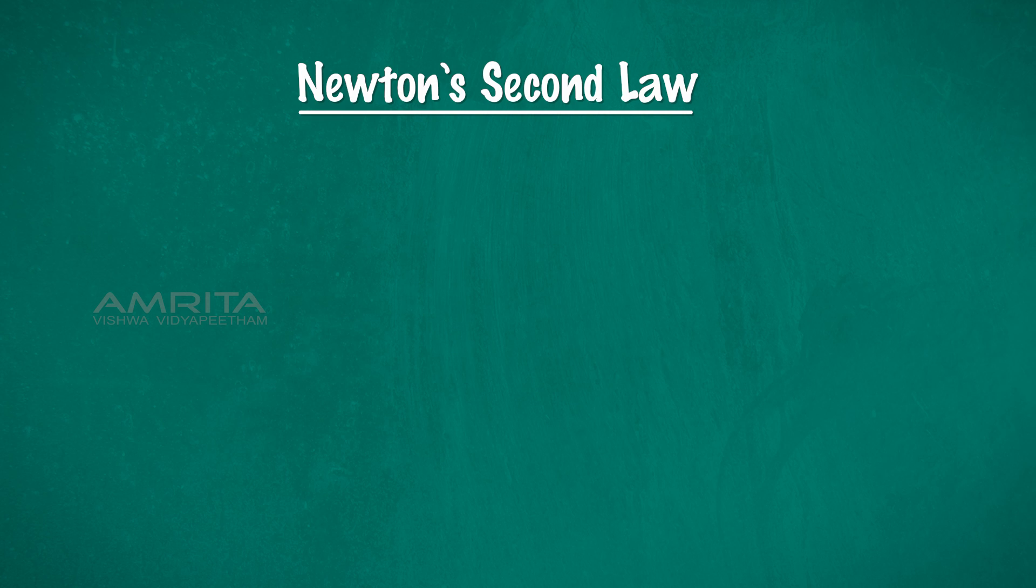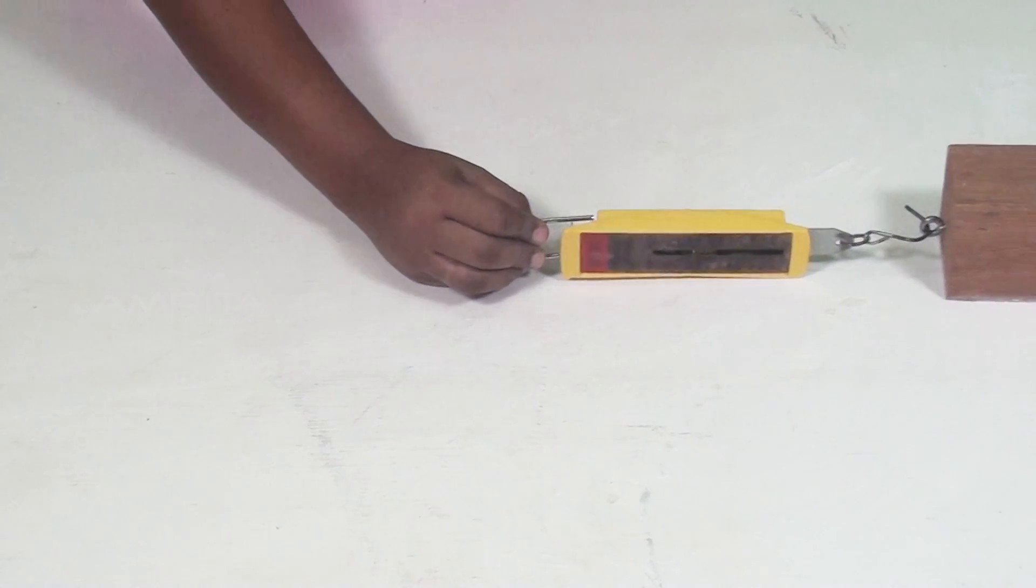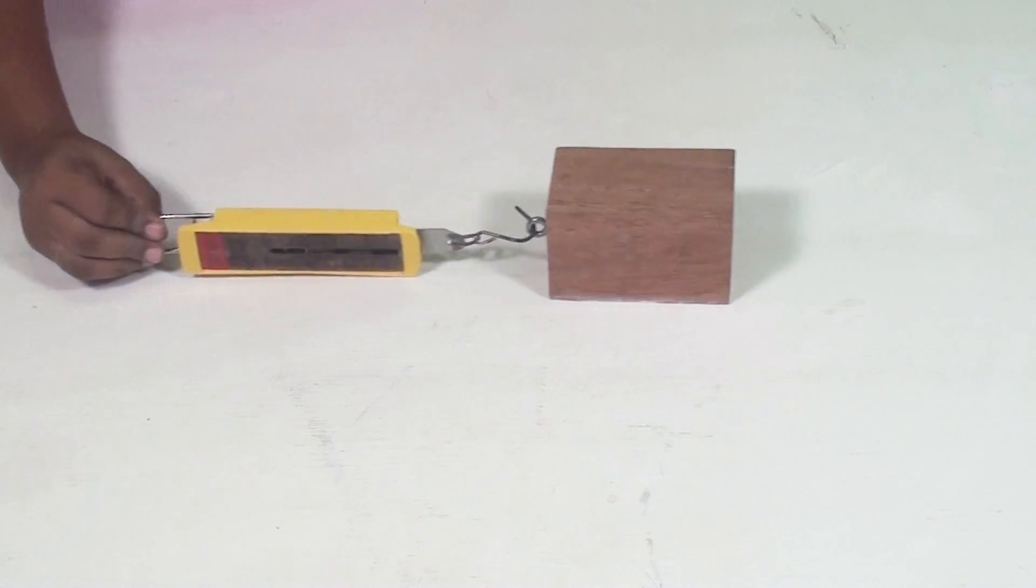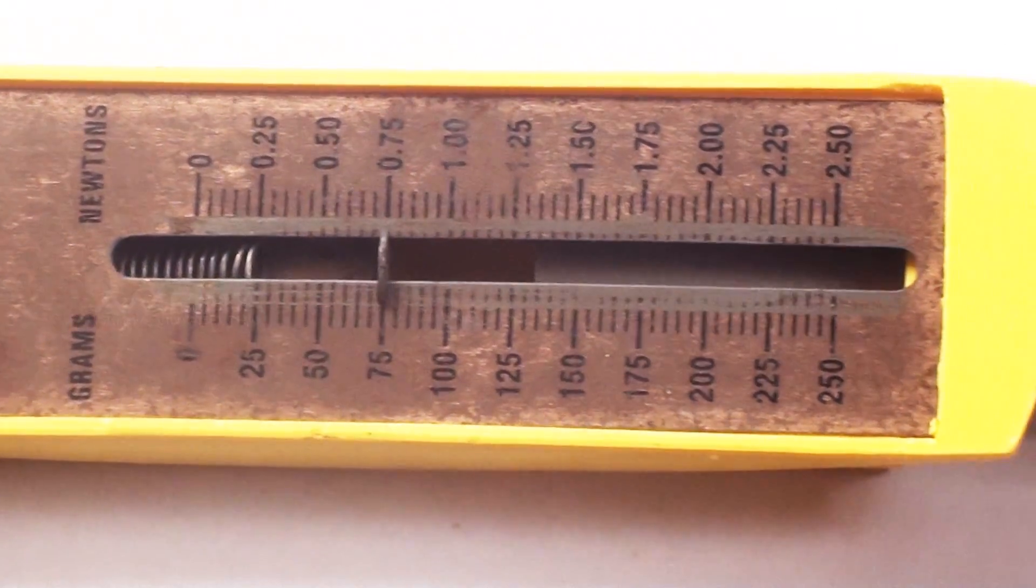This is represented mathematically as F equals MA. We also observed that for a constant acceleration of an object, the unbalanced force applied will be directly proportional to the mass of the object.